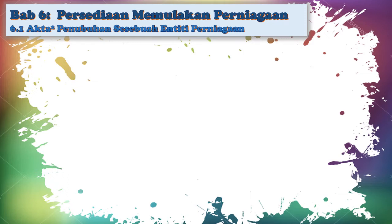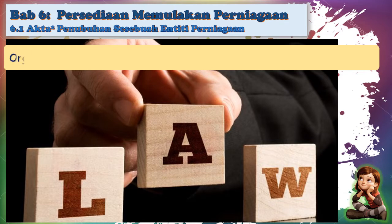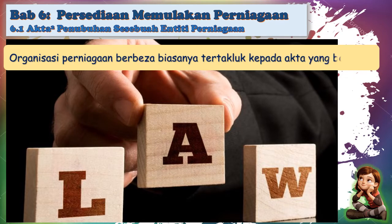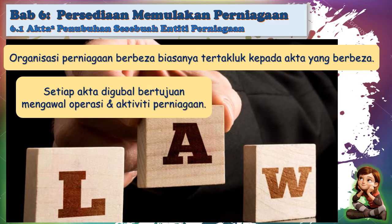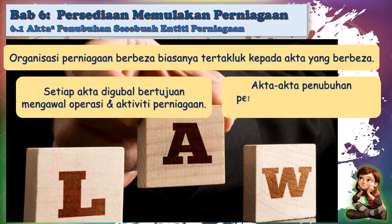Enam poin satu: akta-akta penubuhan sesuatu entiti perniagaan. Perniagaan yang terdapat di Malaysia ada berbagai jenis dan saiz, bermula daripada saiz kecil, sederhana, sehingga bersaiz besar. Organisasi perniagaan yang berbeza ini biasanya tertakluk kepada akta-akta yang berbeza. Setiap akta digubal bertujuan bagi mengawal operasi perniagaan dan juga aktiviti perniagaan. Akta-akta penubuhan sesebuah perniagaan ini boleh diperolehi dalam website SSM ataupun Suruhanjaya Syarikat Malaysia.